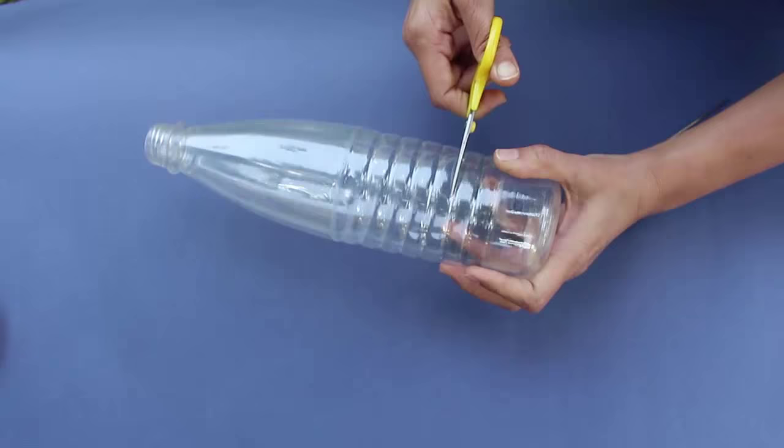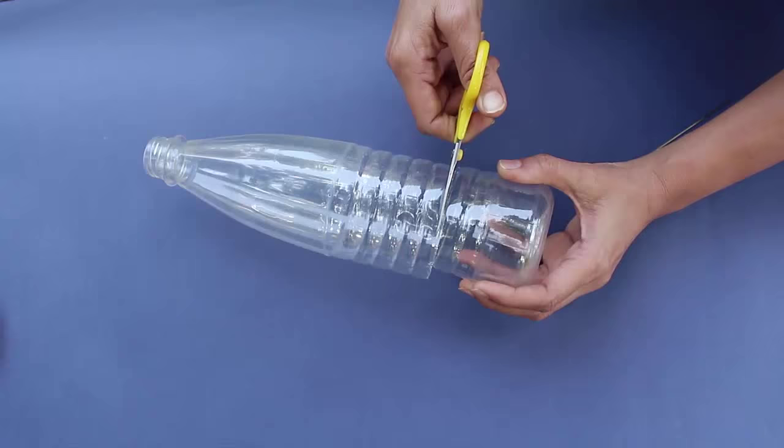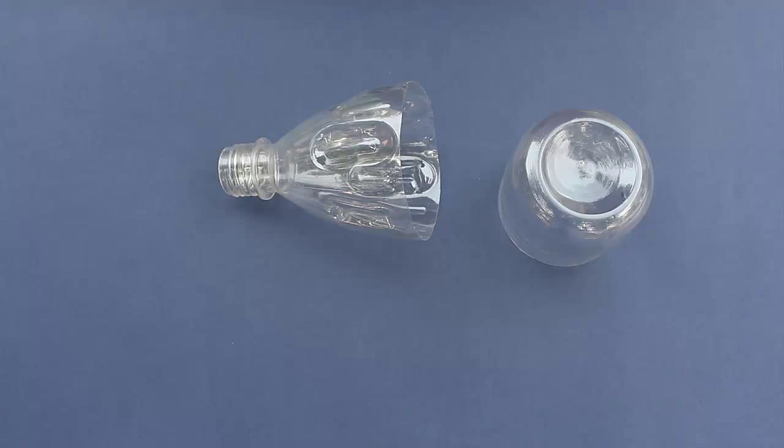Then cut the bottle all along using a small scissors. This way you will get a plastic cup. The propeller will be made from this plastic cup.